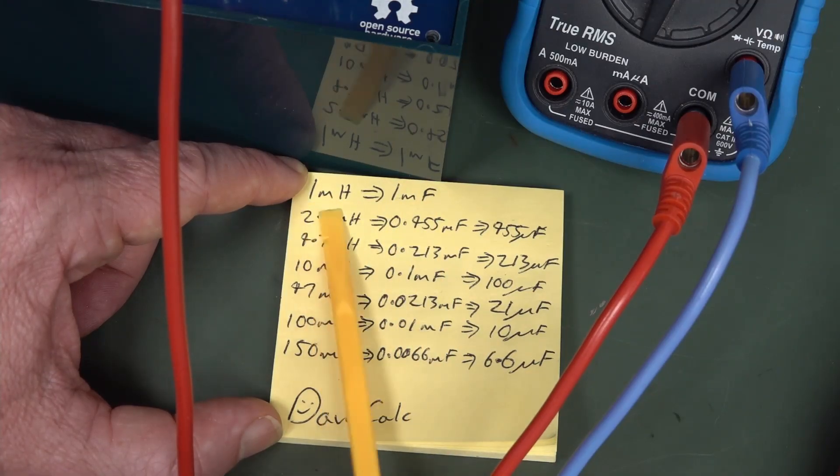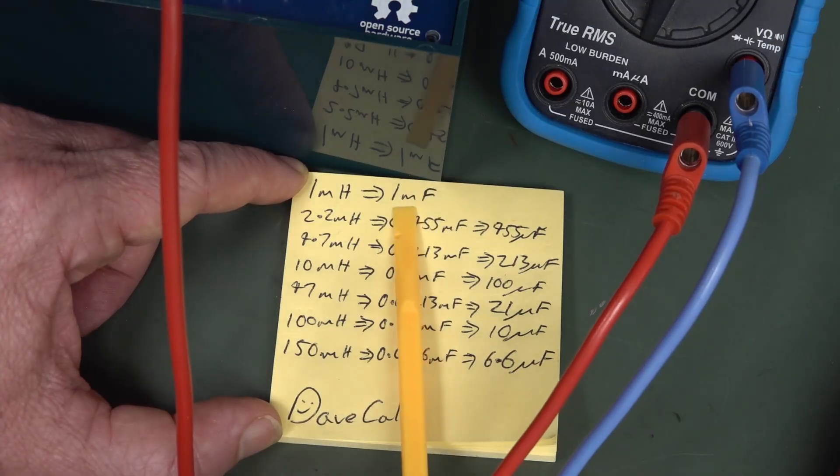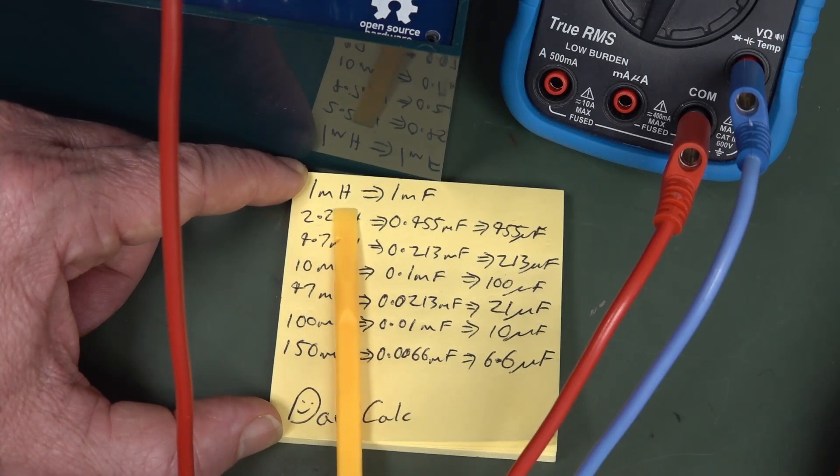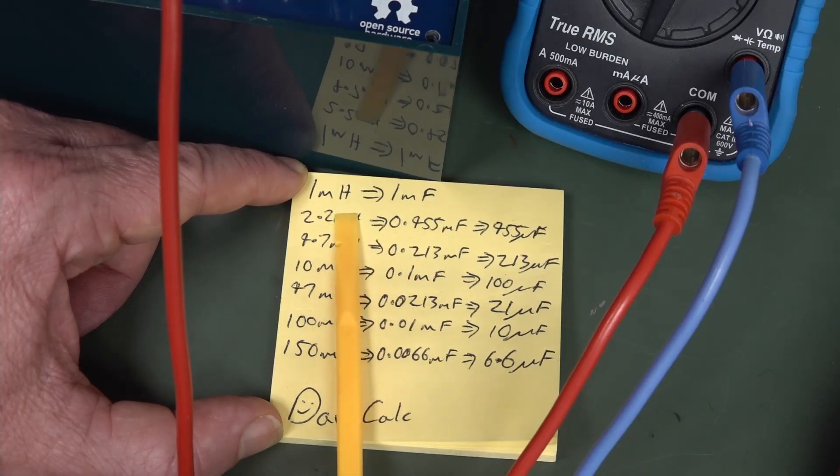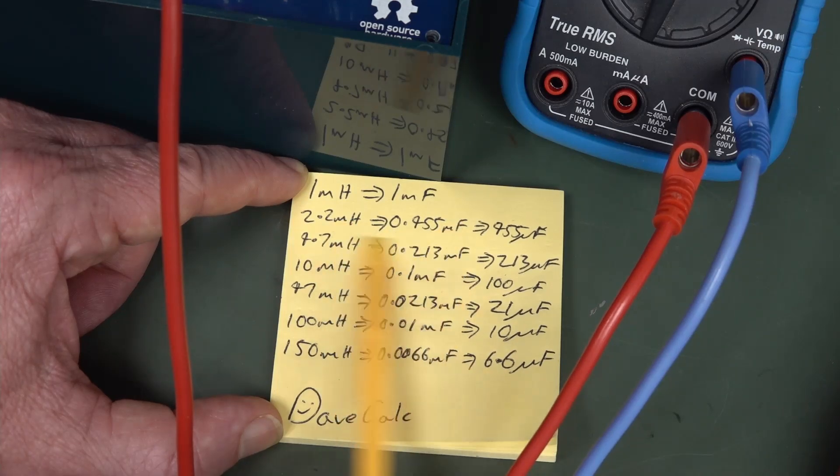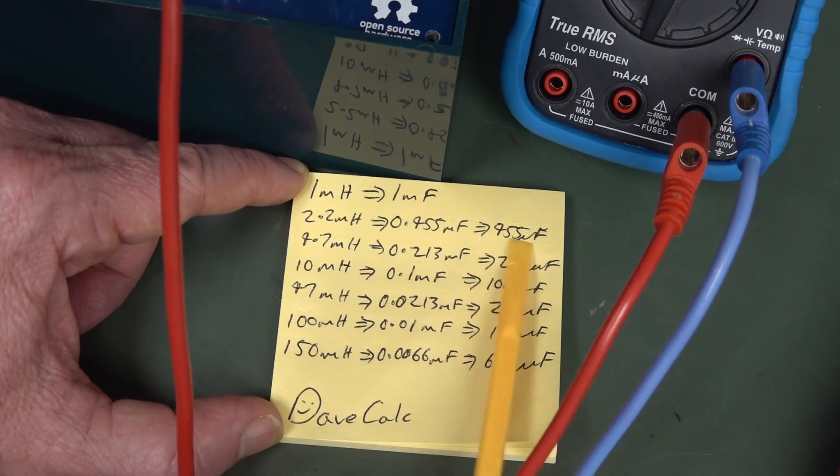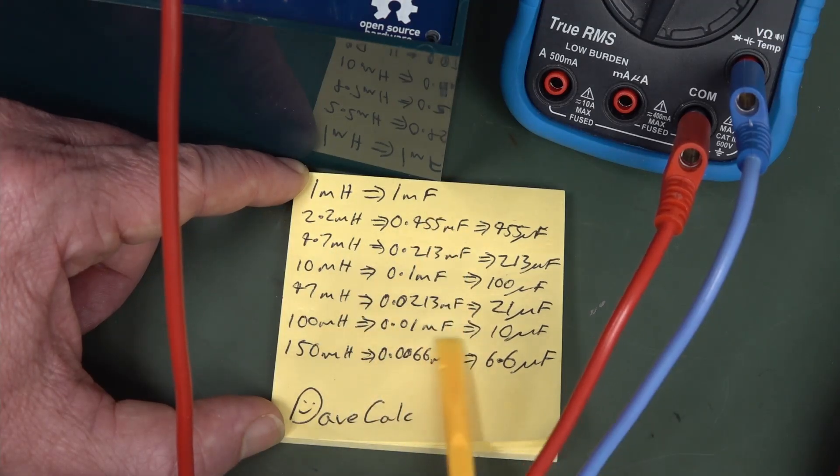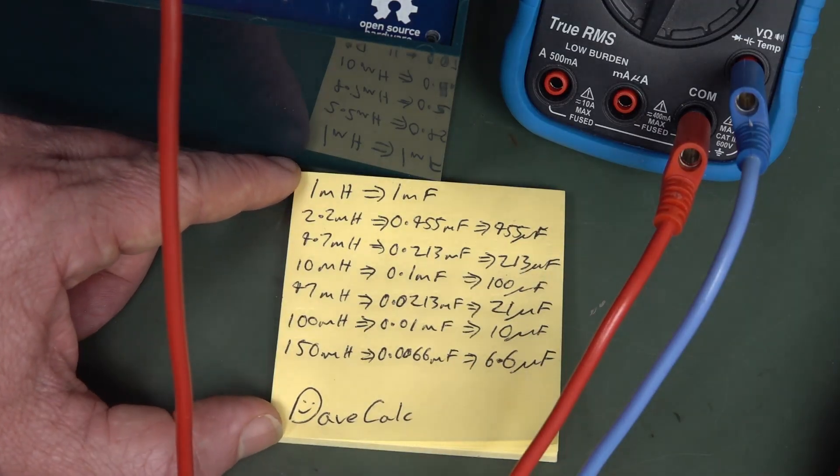So it depends on the range you're on. So one millihenry inductor is actually going to read one millifarad if you've got it on, or it should, in theory, if you've got it on the millifarad range. But it gets weird for the other ones. It gets a bit non-intuitive. 2.2 milli, what you've got to do, you've got to take out the milli there, assuming you're on the milli range on your meter that matches this range, like this, that the inductor you're trying to measure, then it's 2.2. You invert 2.2 on a calculator, and you get 0.55, and then you just keep the units the same. So 2.2 millihenrys should, in theory, read as 0.455 millifarads, or 455 microfarads, and so on, all the way down.